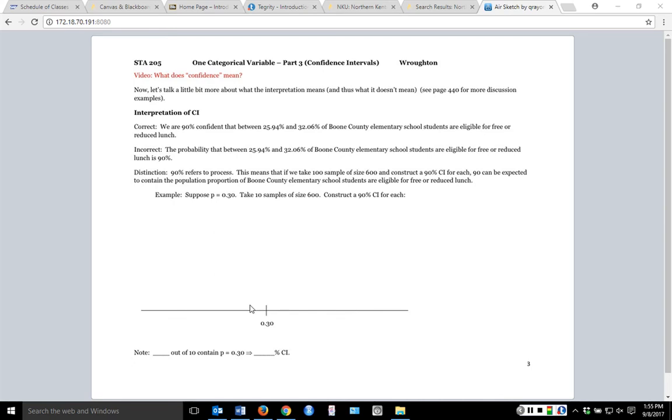When we interpreted that confidence interval together in class, we said that we're 90% confident that between 25.94% and 32.06% of Boone County Elementary School students are eligible for free or reduced lunch. That was pretty much exactly what we said. Now it's incorrect for people to say the probability that between 25.94% and 32.06% of Boone County Elementary School students are eligible for free or reduced lunch is 90%.